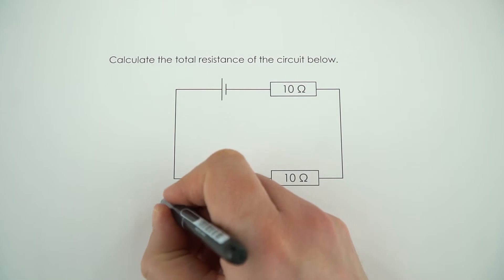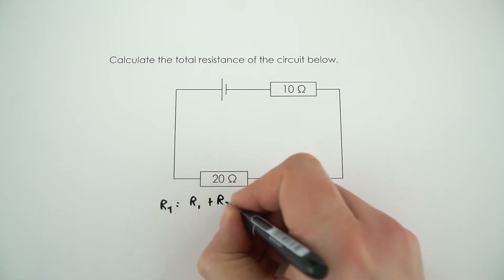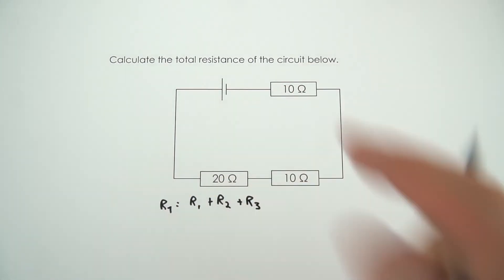To work out the total resistance RT, that's just going to be equal to R1 plus R2 plus R3. Effectively all we do is add up all of these resistances together.